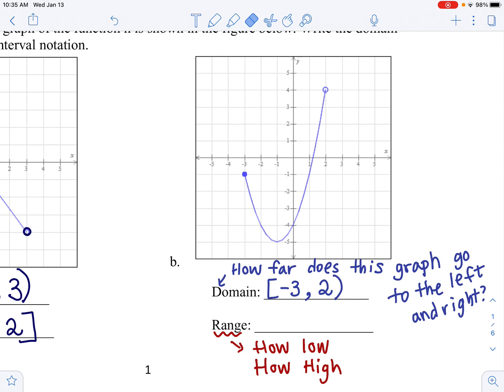How low does this picture go? It's not really this point, right? That is not the lowest point of this graph. The lowest point of the graph is actually over there, right? They just didn't have a point plotted over there.